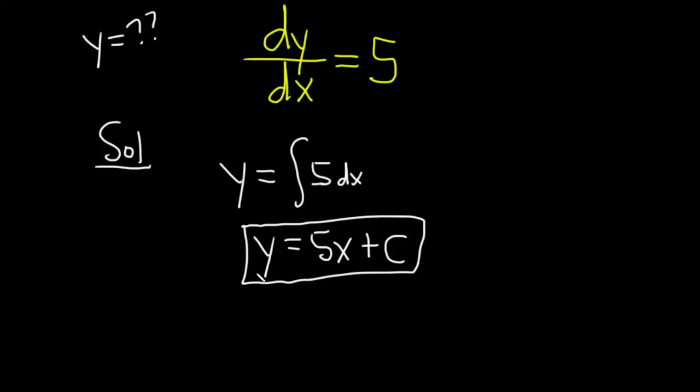It's called the general solution because this is actually all of the solutions. There's infinitely many solutions here, one for each choice of C.